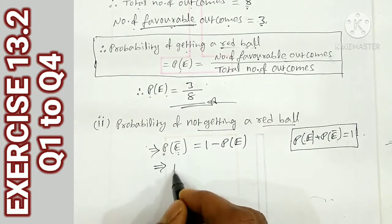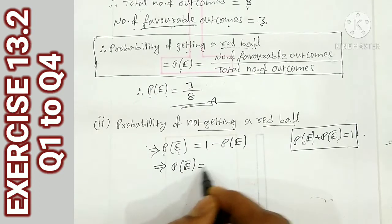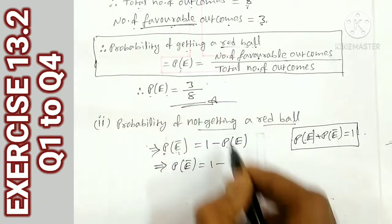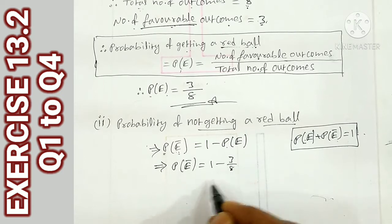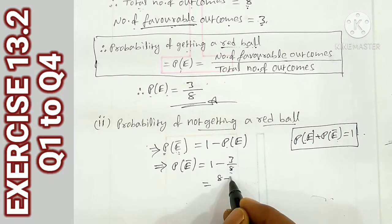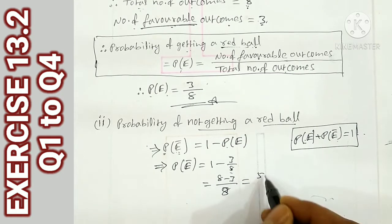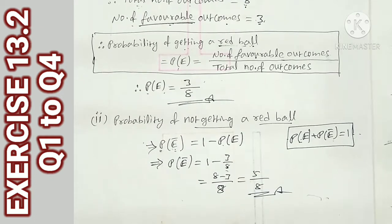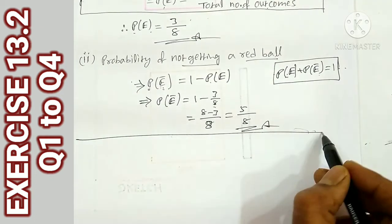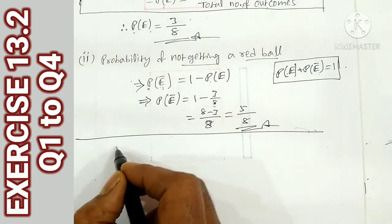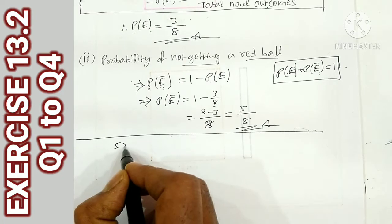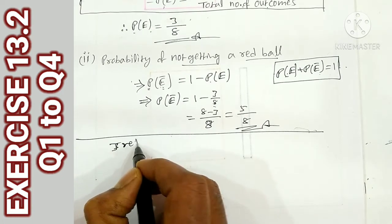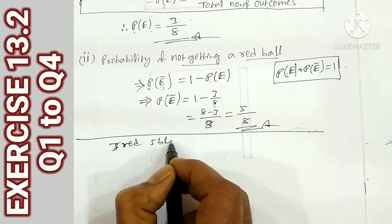P(not red) = 1 minus 3/8 = (8 minus 3)/8 = 5/8. That is the answer. This is the first method.